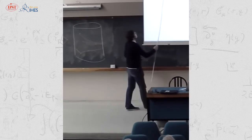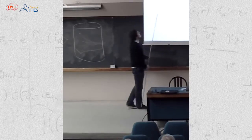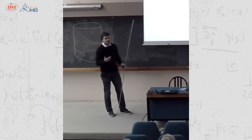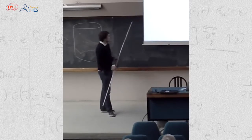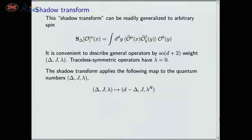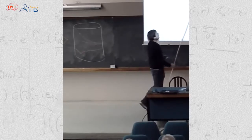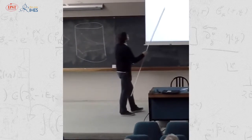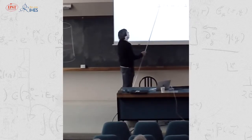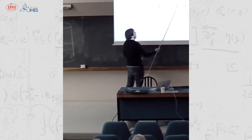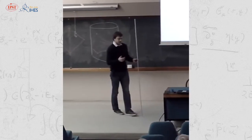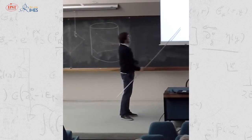We can describe our operators by Young diagrams, where j is the length of the first row and all other rows go into λ. In terms of these weights, the triple (Δ, j, λ) can be interpreted as a weight of the algebra so(d+2), which is the complexified form of the conformal algebra. What the shadow transform does to these quantum numbers is: Δ goes to d minus Δ, and there is some reflection applied to λ which essentially exchanges left- and right-handed spinors in even dimensions.